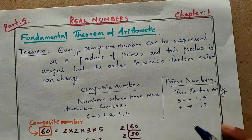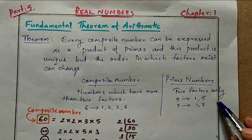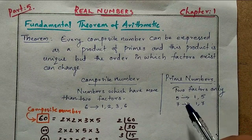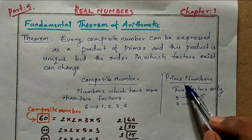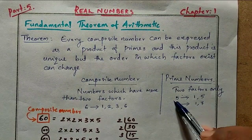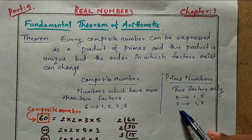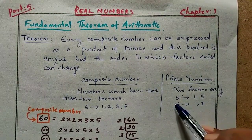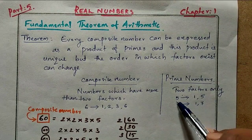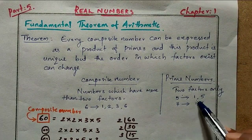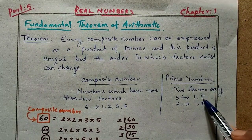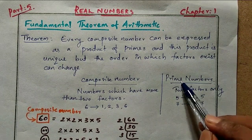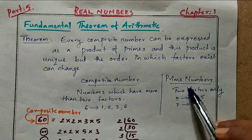The opposite of a composite number is a prime number. A prime number has only two factors. For example, five is a prime number because one and five are its only factors. Similarly, seven has only one and seven as its factors. So in prime numbers, the two factors are always one and the number itself. These are the differences between composite numbers and prime numbers.